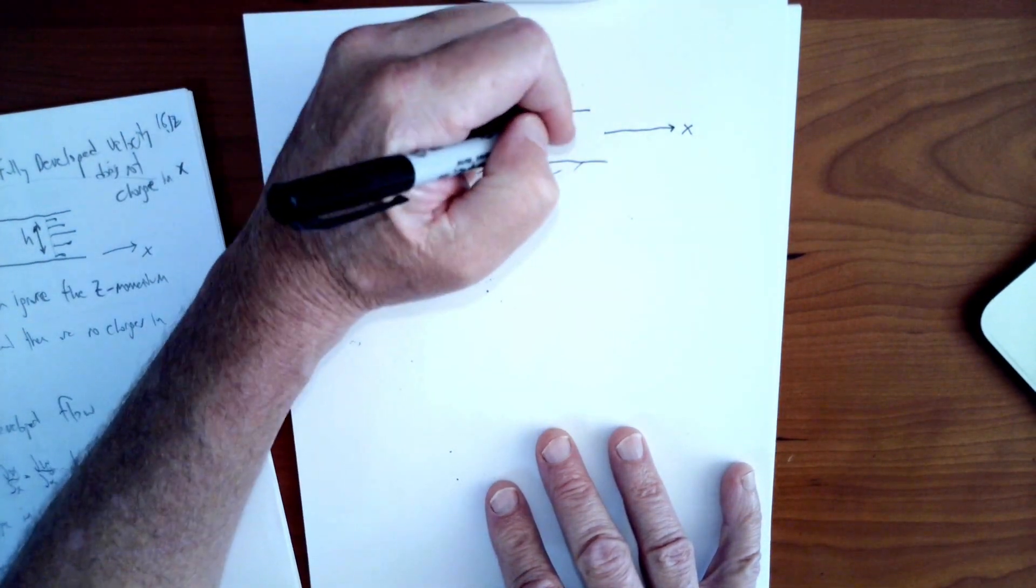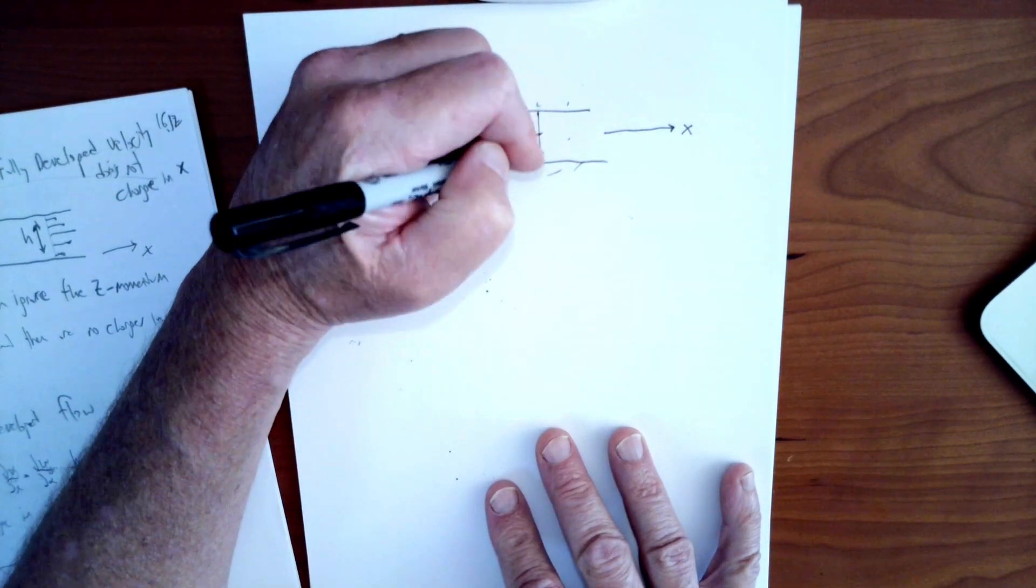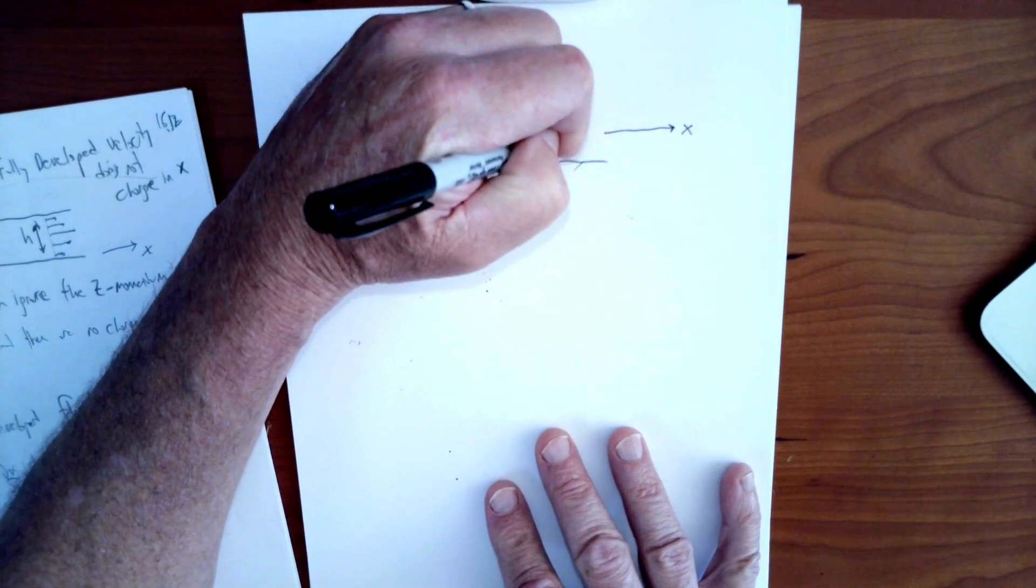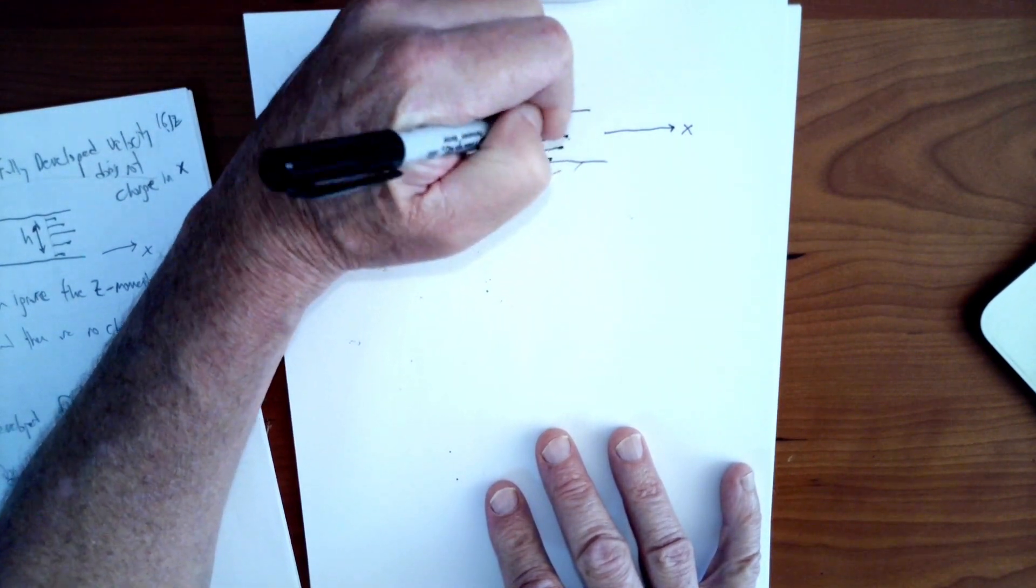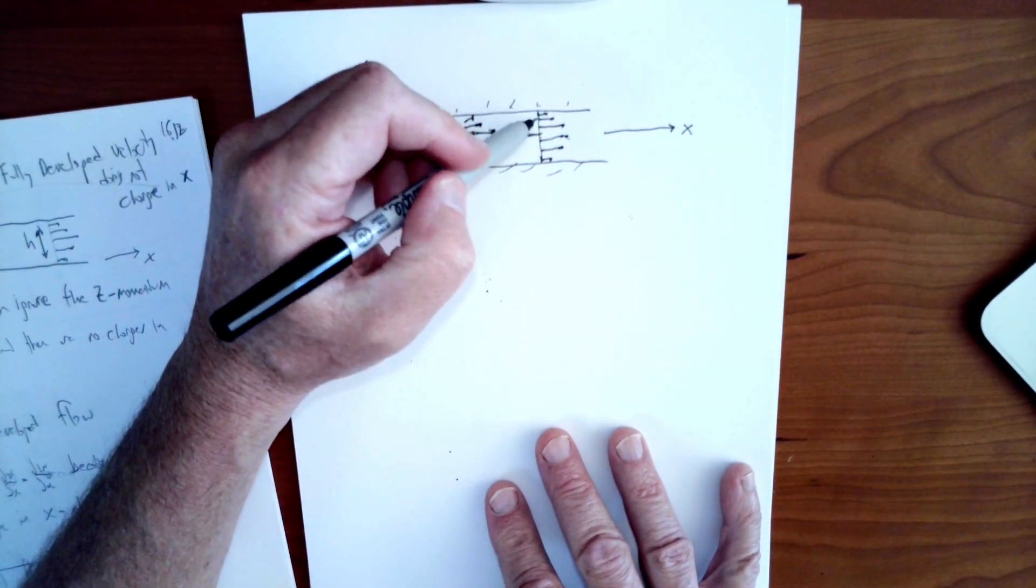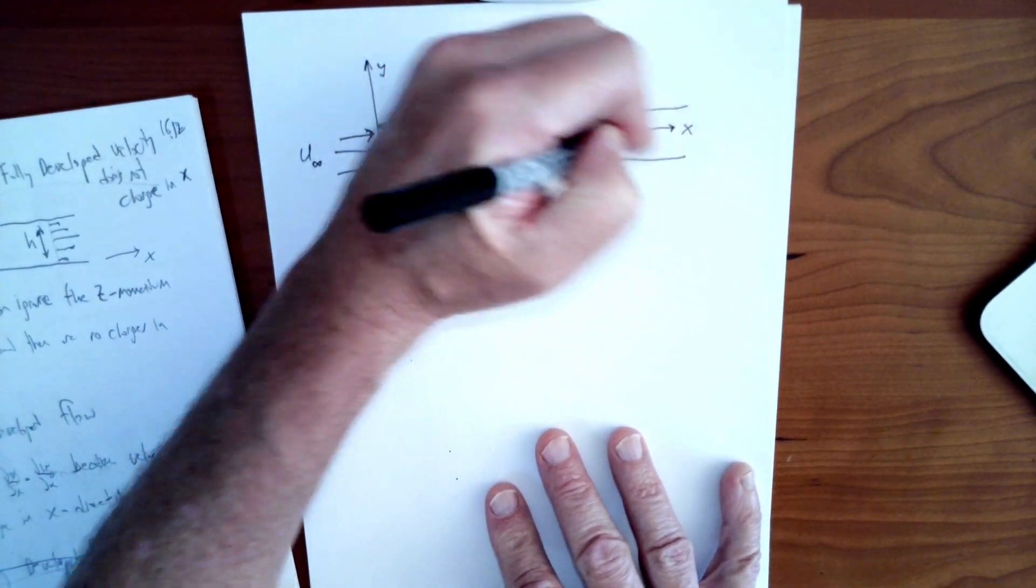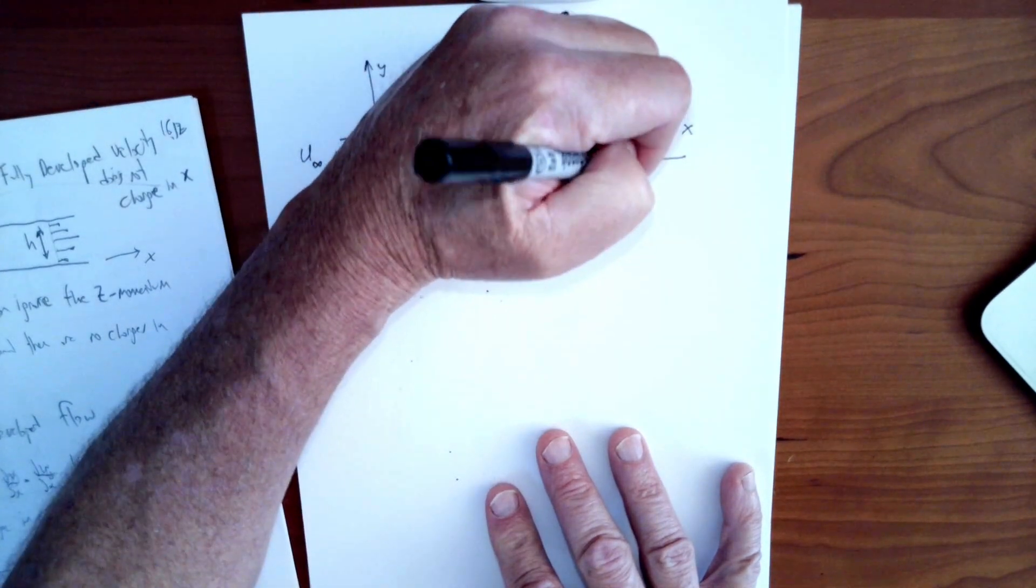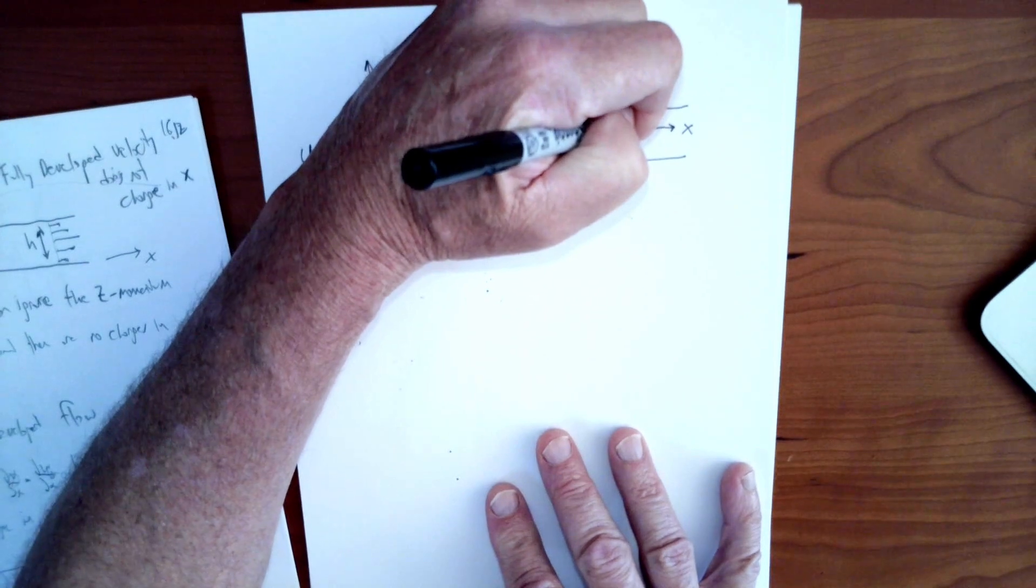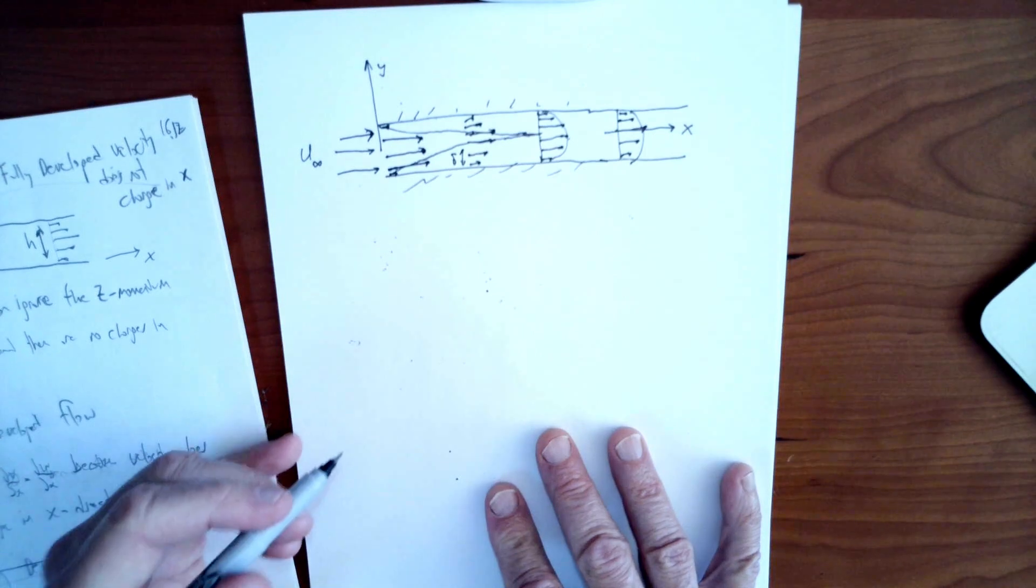As you go even farther, those viscous effects are going to have completely taken over the flow. At this point, somewhere in here, you're going to have a velocity profile that is completely determined by the viscosity effects. The whole flow is being affected by those walls at this point. From here on in, as you go farther down the channel, what people find is that that velocity no longer changes. Once it reaches this kind of shape where the whole flow is being affected by the wall effects, by the viscous effects, that's the region that's called fully developed.